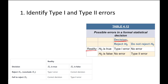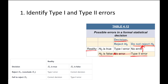A type 1 error occurs when we reject the null hypothesis when the null hypothesis is really true. In other words, we conclude that there was a difference in the population, but in reality there's no difference. This is also known as an alpha error. A type 2 error is when we fail to reject the null hypothesis when in reality the null hypothesis is false — we conclude there's no evidence of a difference when really there is one. This is also known as a beta error.